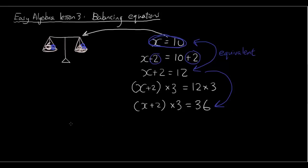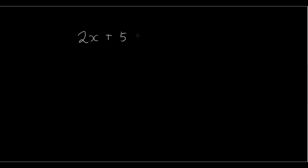Now let's try to solve an equation using the opposite of what we have done. If I told you 2x plus 5 equals 10, and I want you to work backwards to find out what x is — using the balancing equation technique, we know that we can do whatever we want as long as we do it to both sides, because the equation will stay equal. The trick to solving this equation is to do the same thing to both sides, so let's try taking away 5 on both sides.